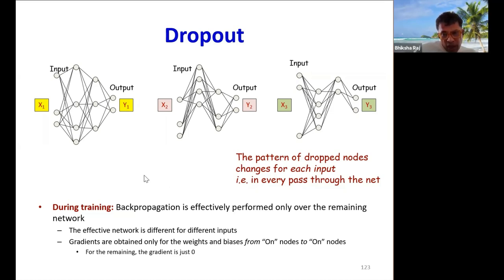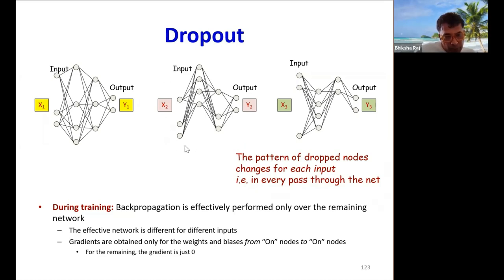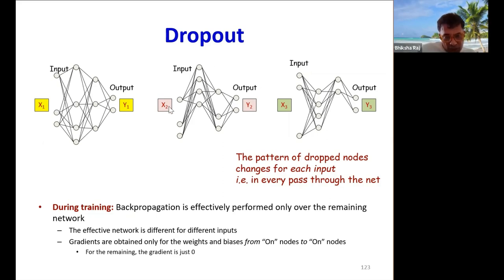For each input, when we perform backpropagation, we only compute the derivatives for the weights for edges that connect to neurons that are both switched on. During backpropagation we effectively only work on the reduced network. The gradients for all remaining terms are set to zero, and we update the parameters with the gradients computed in this manner.